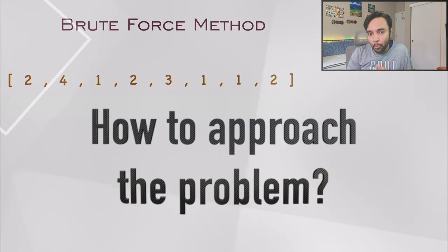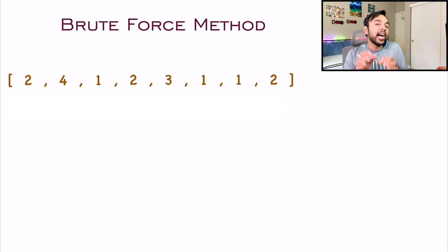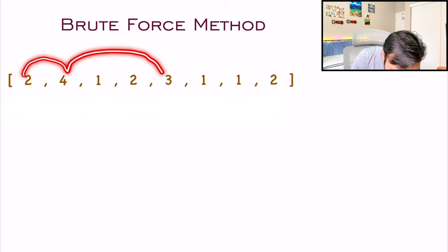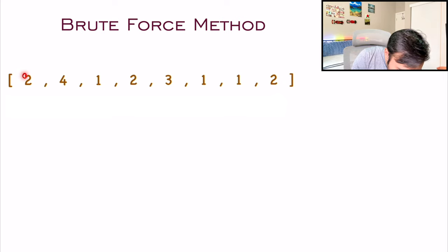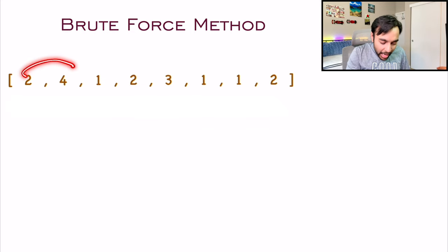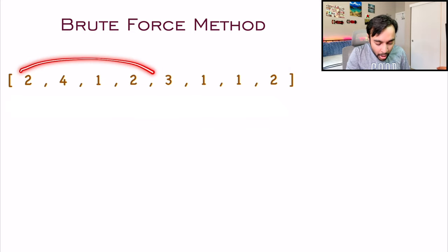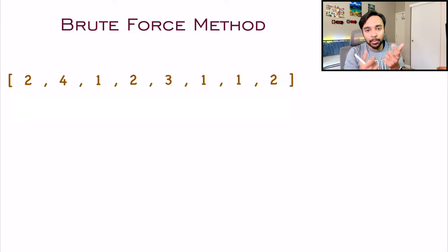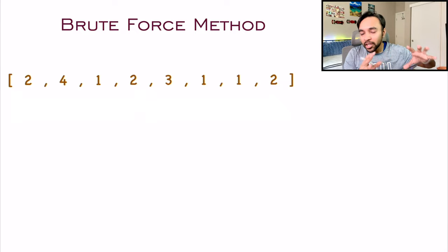Let us start understanding the problem even more. The most naive way and the brute force approach will be that you find out all the different combinations. One approach will be 2, 4, 3, and then 2. The other approach could be 2, 1, 2, 1, 1, 1, and then 2. Similarly, you will have so many different combinations of how you can reach the very end. You just find out all of them and then determine that this is the minimum number of jumps required. You can already see that it will take up a lot of time and it is not a correct solution.